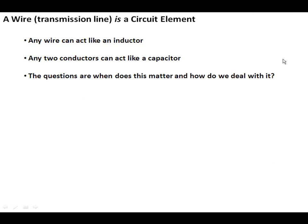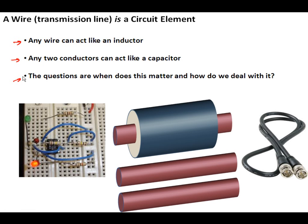So what do we know? Any wire can act like an inductor. Any two wires can act like a capacitor. It turns out that a single wire also has capacitance, but we'll learn about that later. So when does this matter? When do we need to treat wires like inductors and pairs of wires like capacitors? And then how do we deal with it in a way that we can actually do calculations?